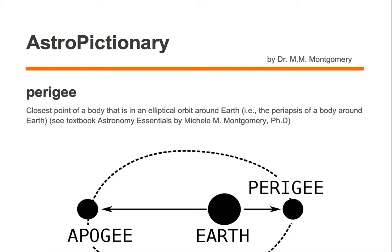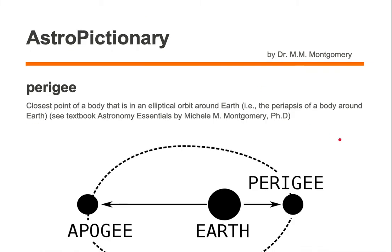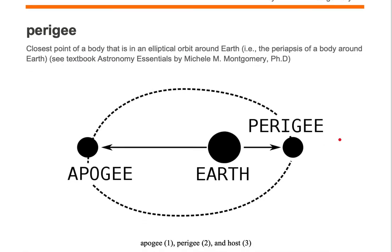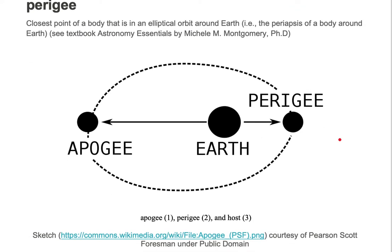Perigee is the closest point of a body that is in elliptical orbit around the earth — i.e., it is the periapsis of a body around earth. When we're talking about bodies making elliptical orbits around the earth, we talk about perigee as opposed to periapsis.